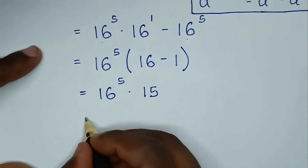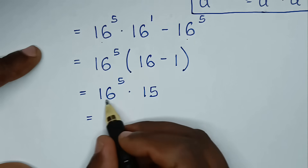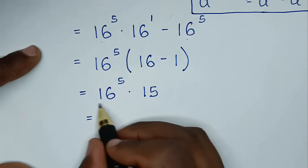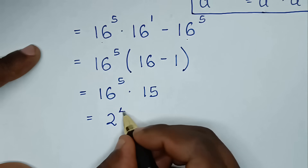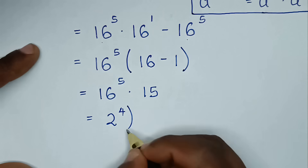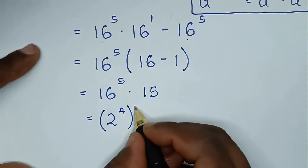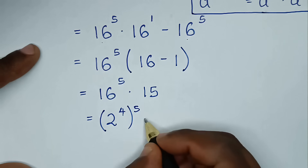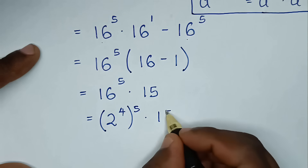Then it will be equal to, into here, 16 power of 5 where 16 is the same as 2 power of 4. Then bracket this power of 5 times 15.